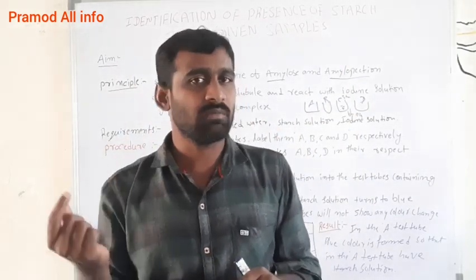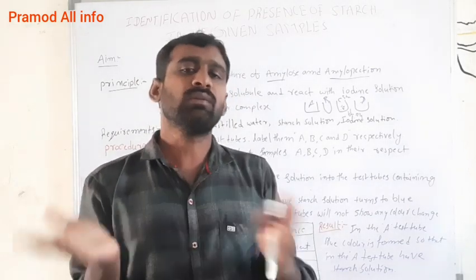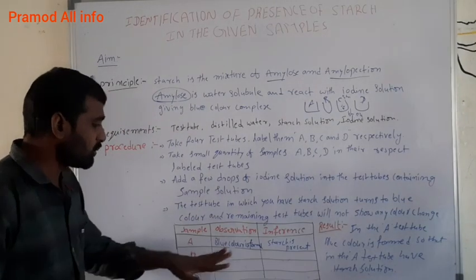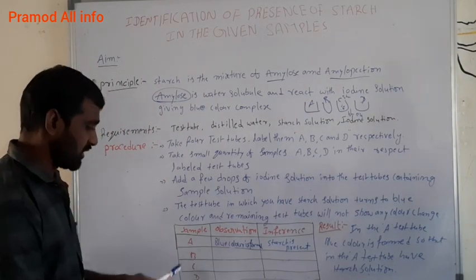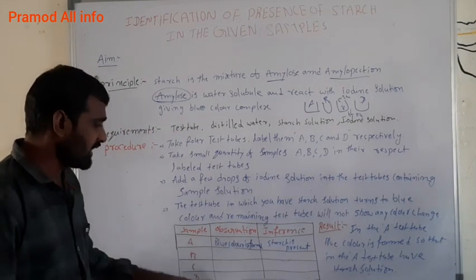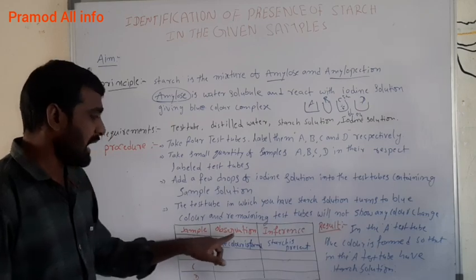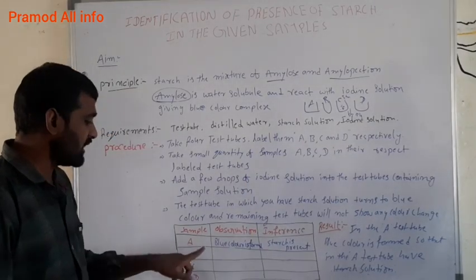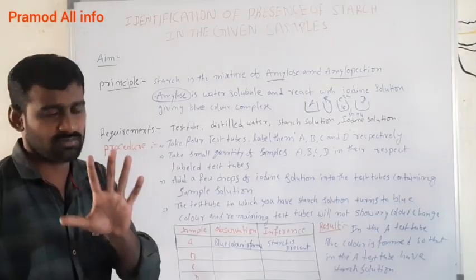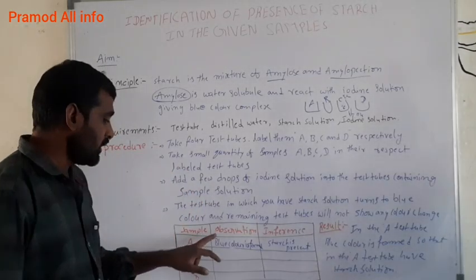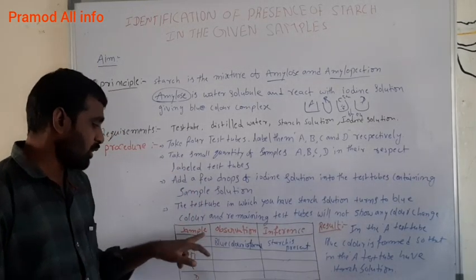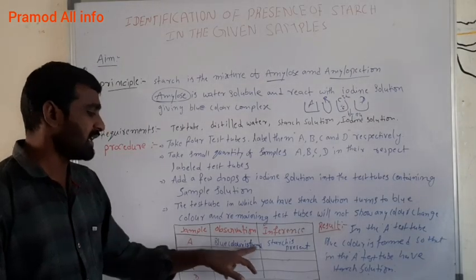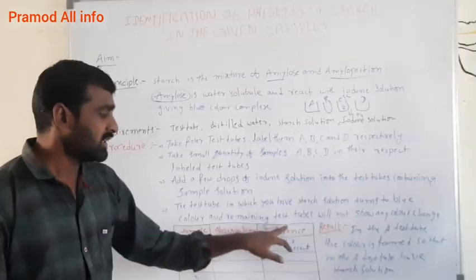When we do the experiment, we will write the results in the results table. I will give you an example. The table has columns: Sample, Observation, and Inference. I will write the results for each sample.